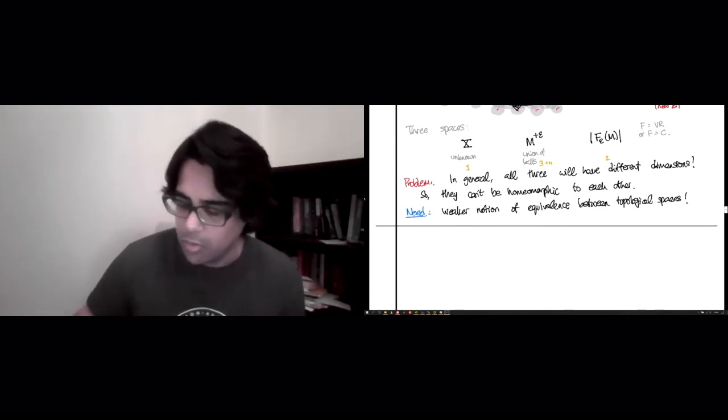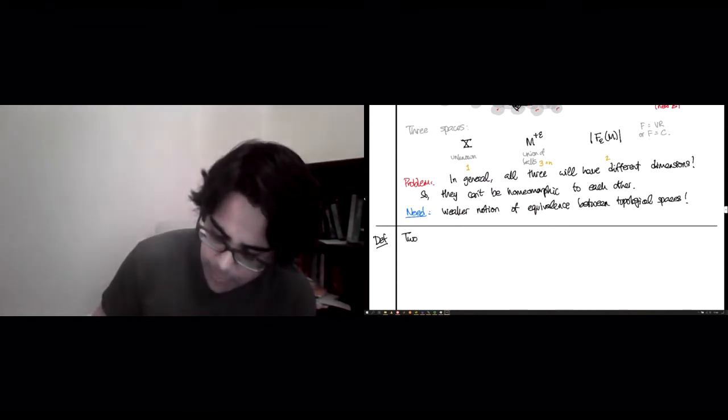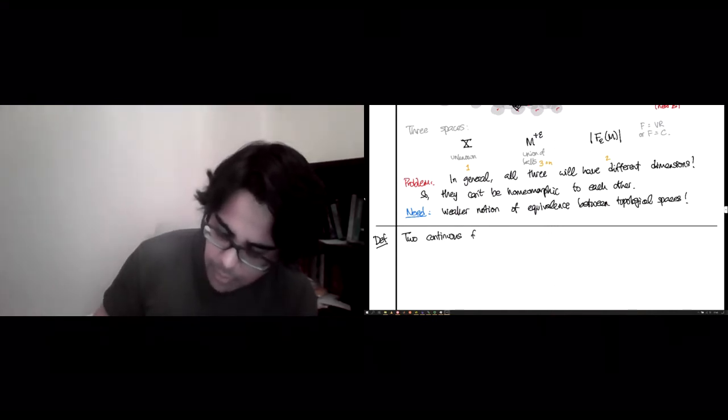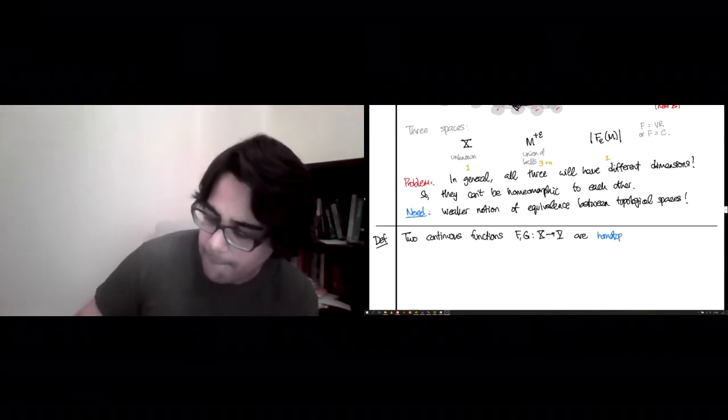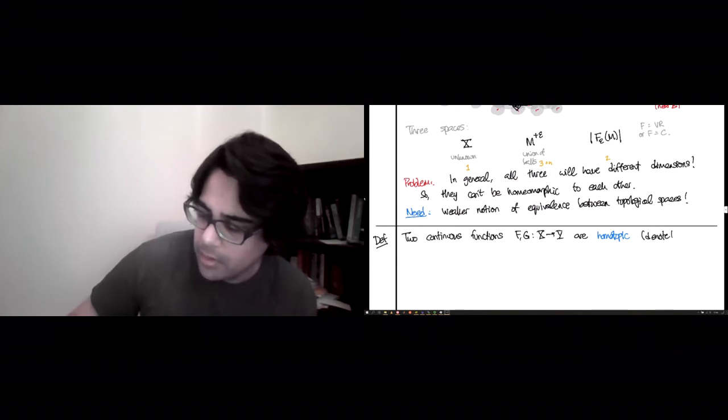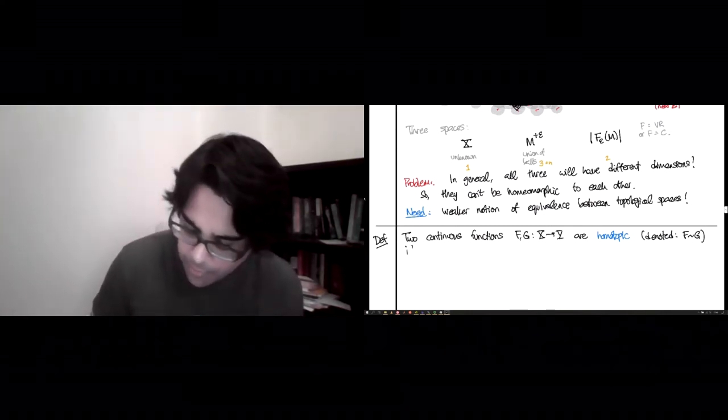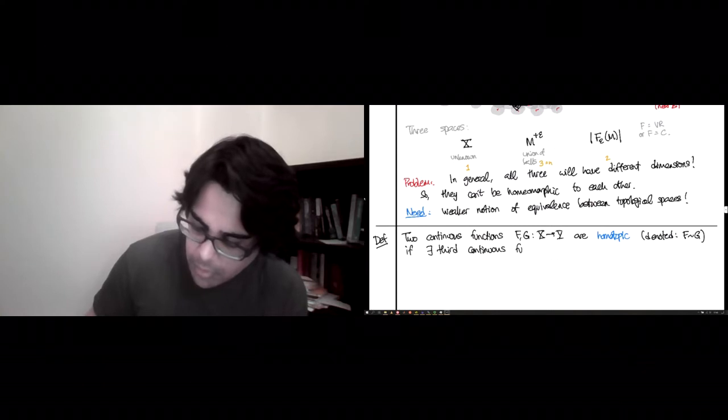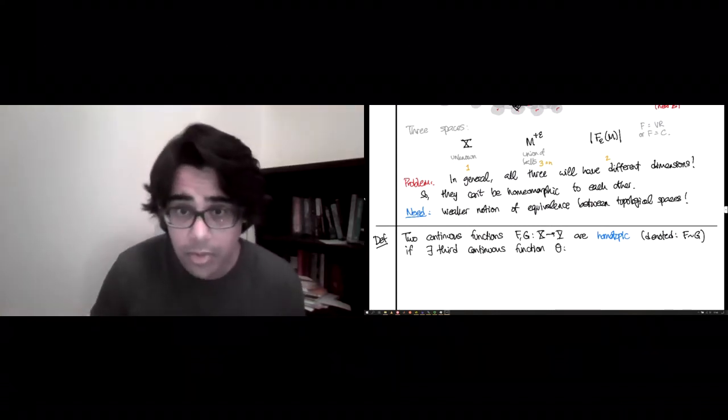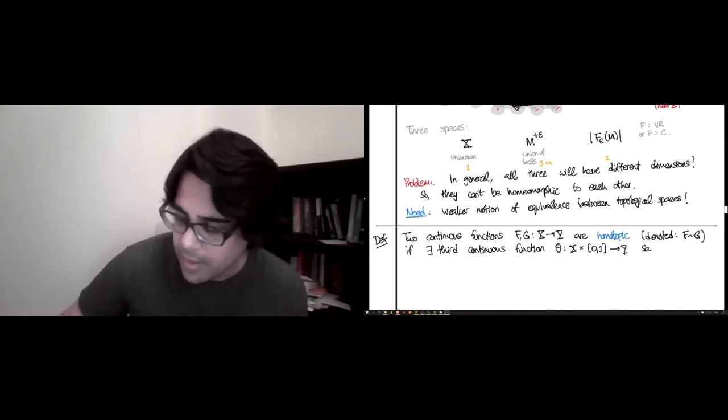If you've seen it before, great. If you haven't seen it before, no need to panic. We will go over it carefully and introduce everything we need during the course of this week. So the first thing to know about is when two functions are put in the same bucket, when they are in the same equivalence class. So two functions, continuous functions, let's call them f and g, between topological spaces X and Y, are homotopic. And we'll denote this by f squiggly g, because it's a squiggly relationship. So these are homotopic if there exists a third continuous function.